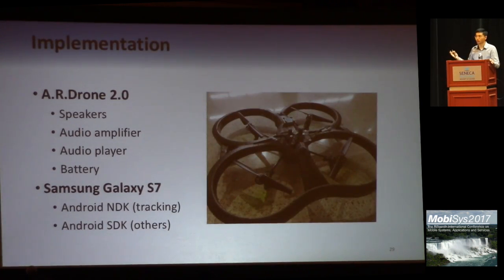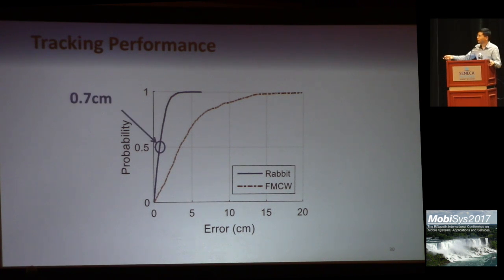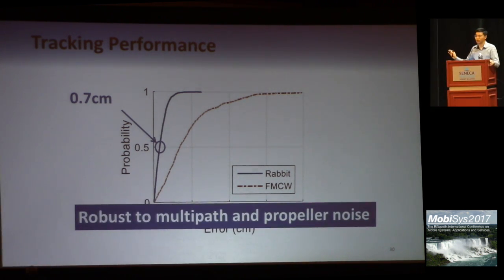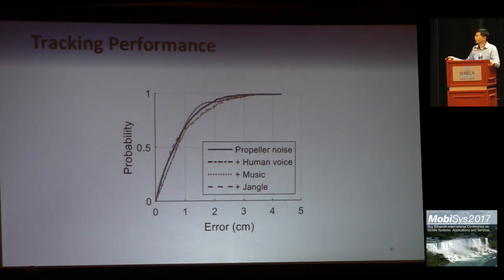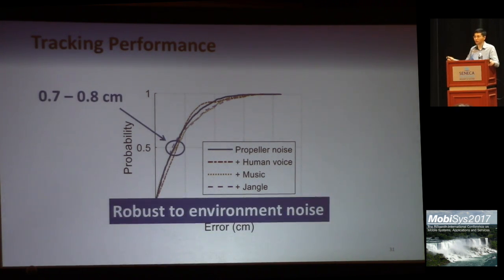We implement our system on an AR drone and a Samsung i7 laptop. To evaluate tracking performance, we compare the distance estimation error of our approach and traditional FMCW. Our approach achieved 0.7 cm tracking error even under the presence of drone noise and severe multipath. Also, when various types of environment noise are present, the performance of our tracking does not degrade, indicating the robustness of our approach to environment noise.